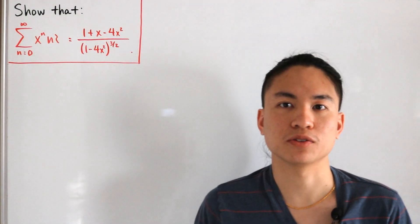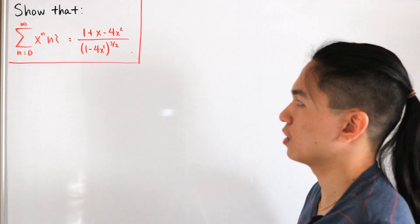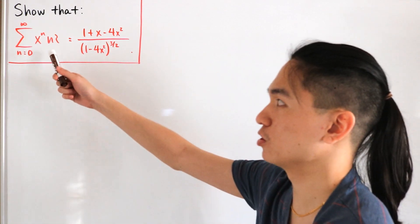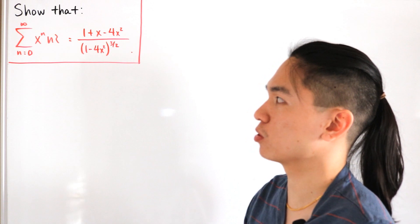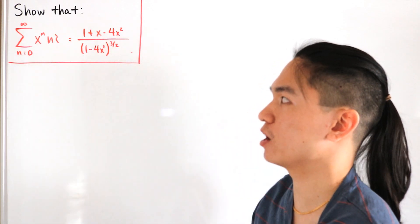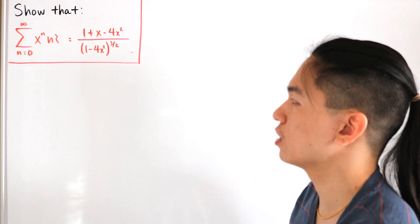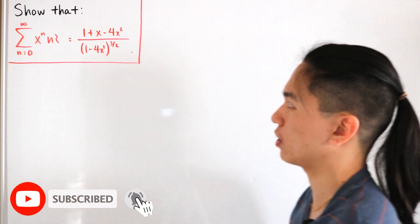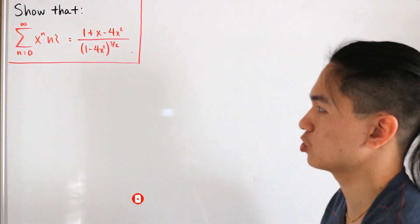Welcome back to another video. Here we have another generating function, this time dealing with the swinging factorial. We want to show that the closed formula for the infinite sum from n=0 to infinity of x^n multiplied by the swinging factorial of n is equal to (1 + x - 4x²) divided by (1 - 4x²)^(3/2).